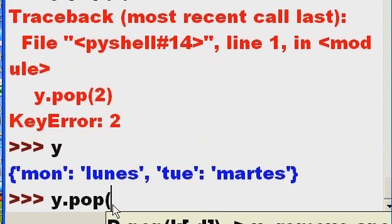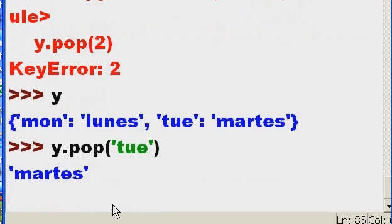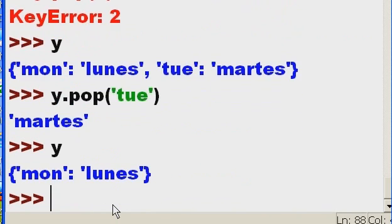y.pop, and what I want to key in is the key, 'tue', and it pops martes off the list. Let's key in y and the key Tuesday and the value associated with that key, martes, is now gone.